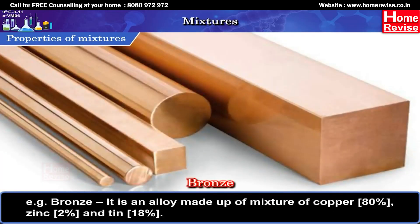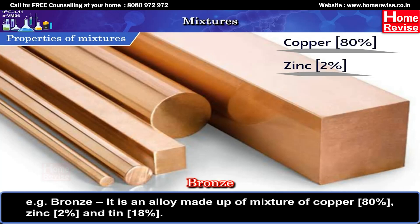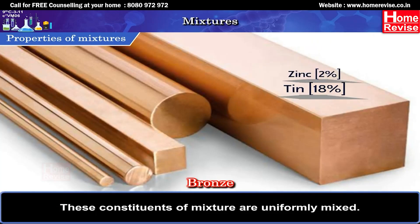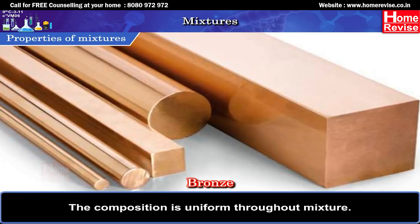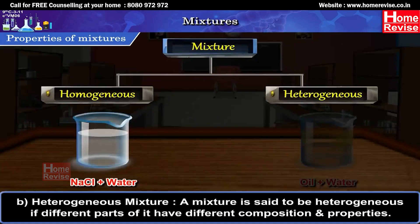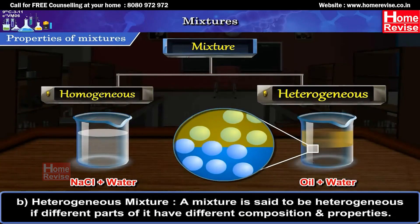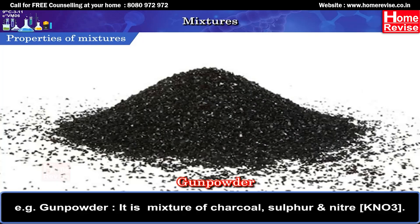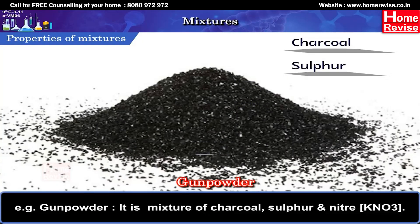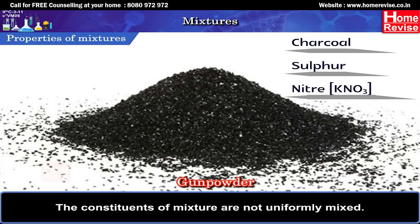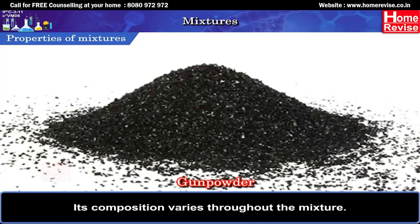Example of homogeneous mixture — Bronze: an alloy made up of a mixture of copper (80%), zinc (2%), and tin (18%). These constituents are uniformly mixed; the composition is uniform throughout the mixture. Heterogeneous mixture: A mixture is said to be heterogeneous if different parts of it have different composition and properties. Example — Gunpowder: a mixture of charcoal, sulphur, and nitre. The constituents are not uniformly mixed and composition varies throughout the mixture.